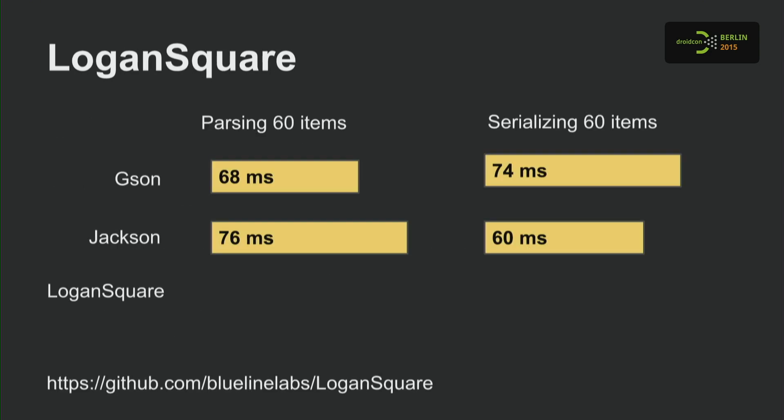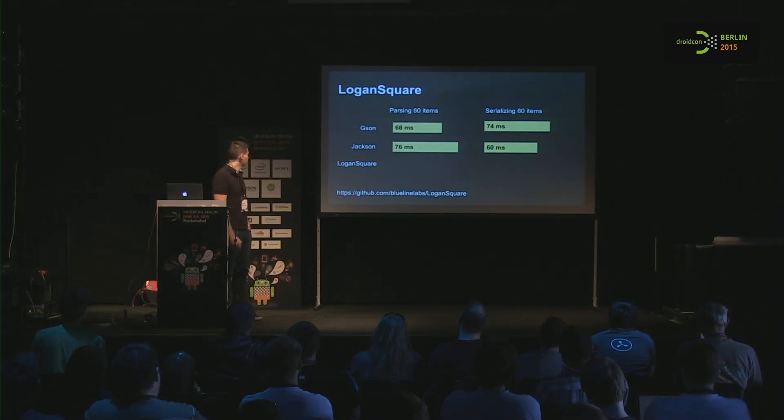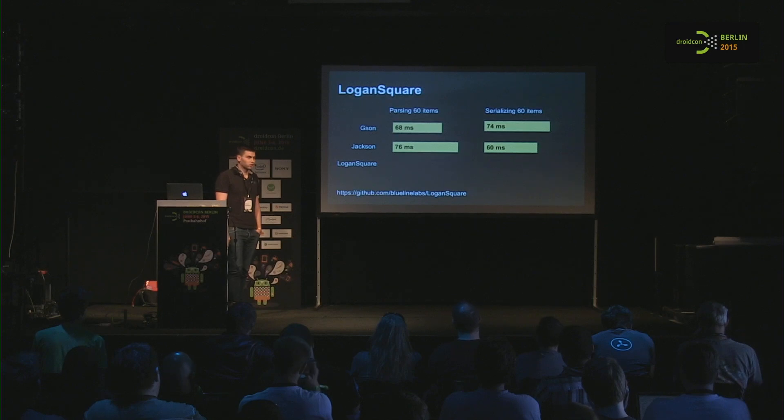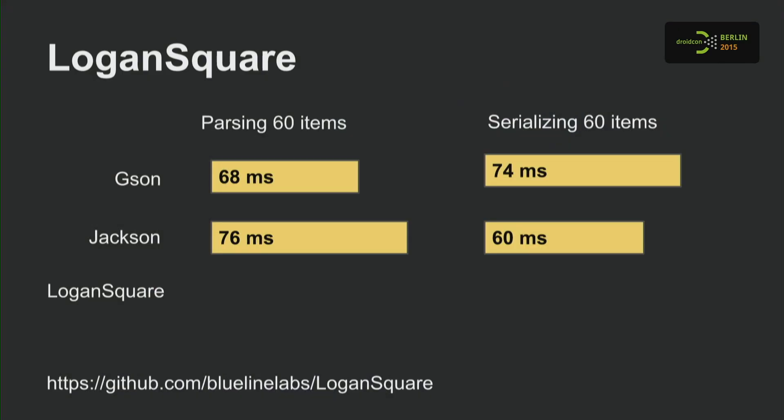Take JSON parsing — Jackson and Gson do that by using reflection. There's a benchmark from the guys at BlueLine Labs where they parse 60 items. Basically, they wrote their own annotation-processing-based JSON parser called LoganSquare. Instead of around 60 to 70 milliseconds to parse 60 items, it only takes 17 milliseconds, or 10 milliseconds to serialize.